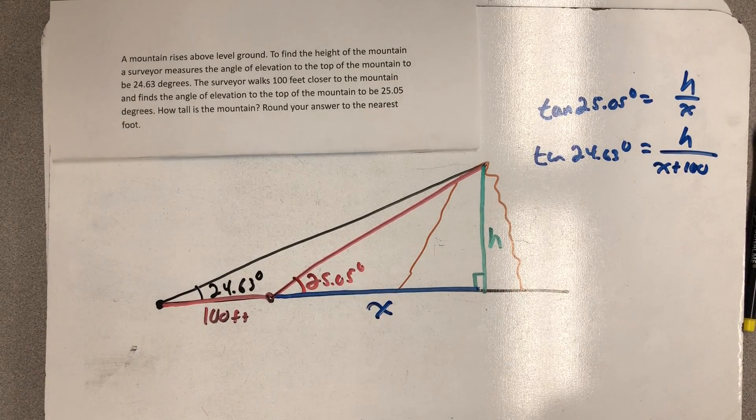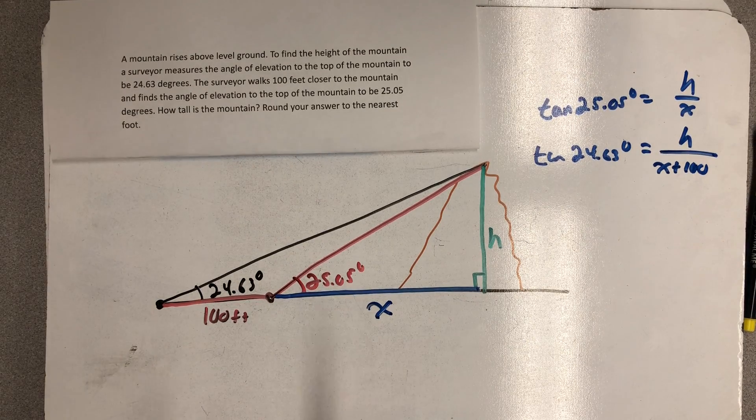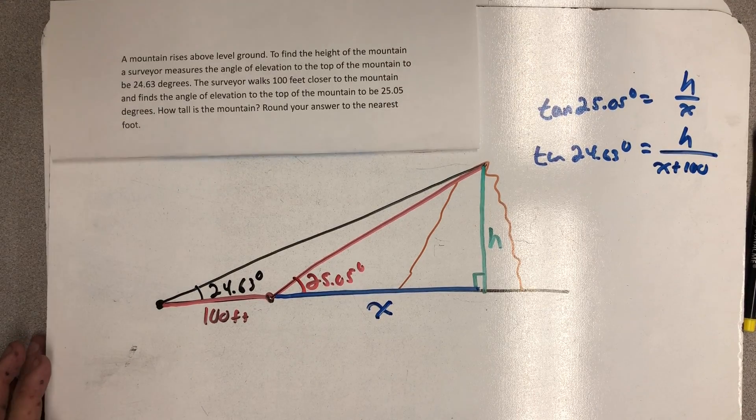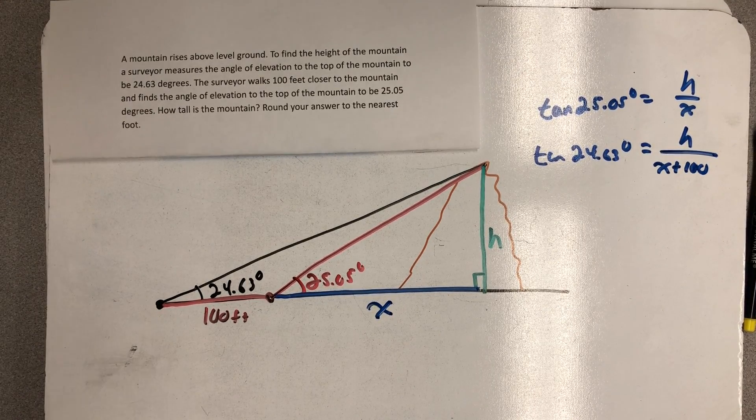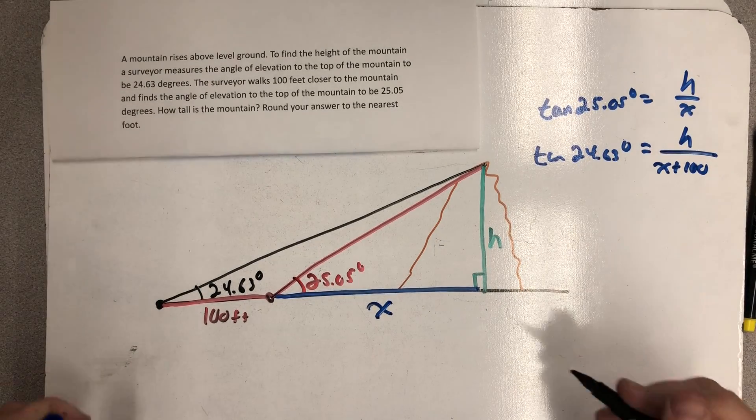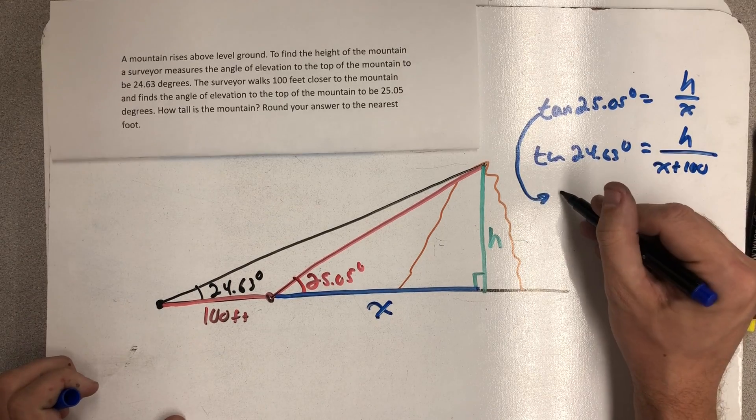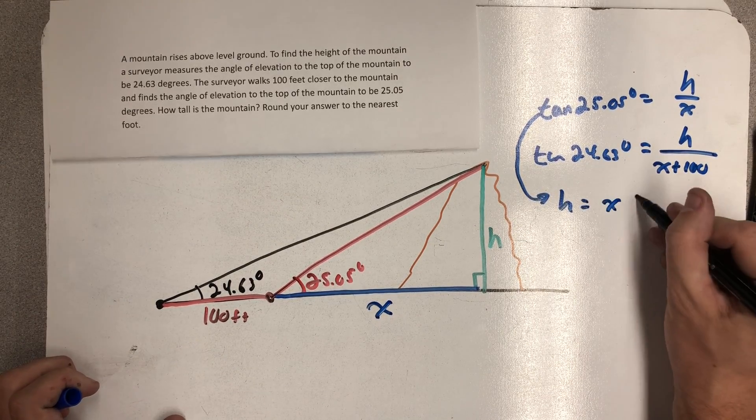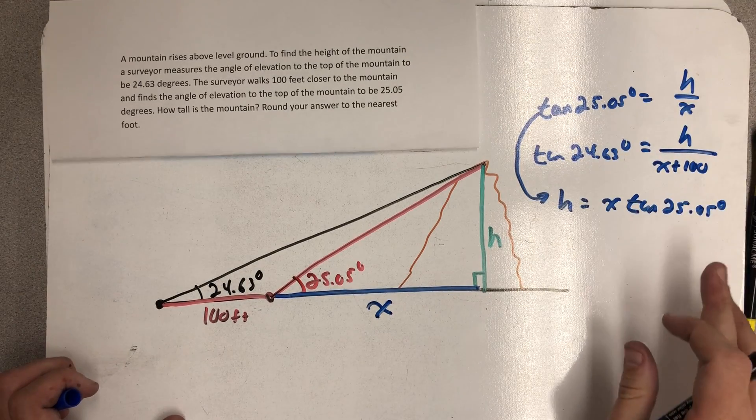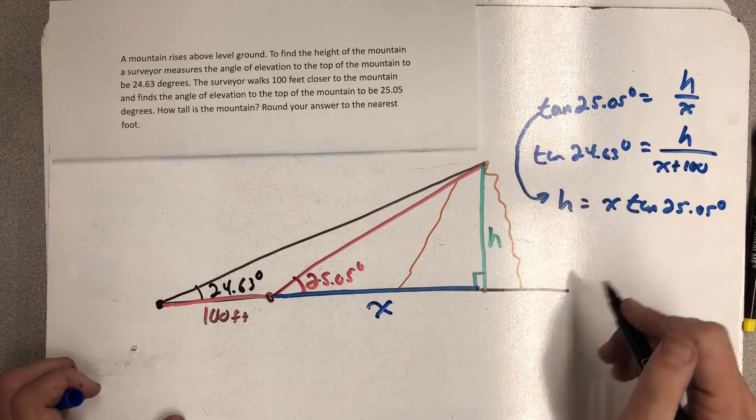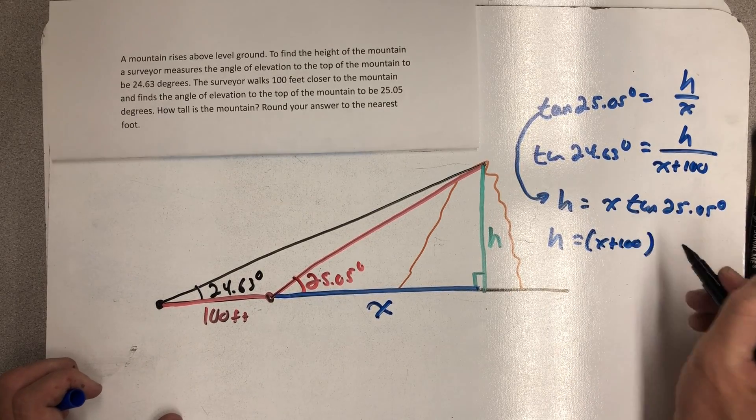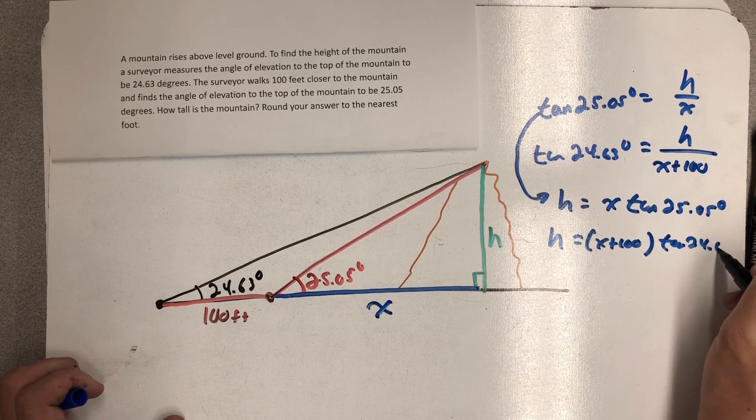And so what I really see here are two different equations, both with two variables. Because at the end of the day, tangent 25.05 is a number and the tangent of 24.63 degrees is also just a number. I'm going to solve both of these equations for h and set them equal to each other, thinking about substitution as a method of solution here. So if I multiply both sides here by x, I get x times the tangent 25.05 degrees is equal to h. I'm going to do h is equal to x plus 100 in parentheses times the tangent of 24.63 degrees.